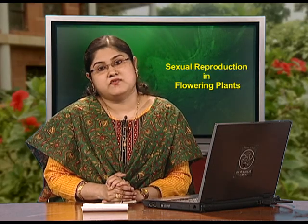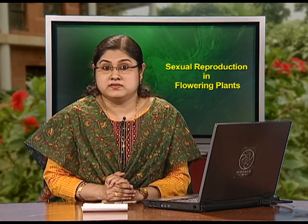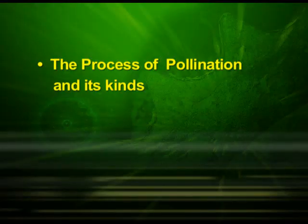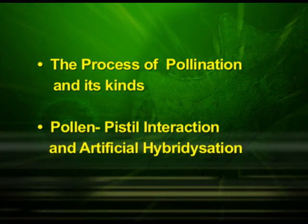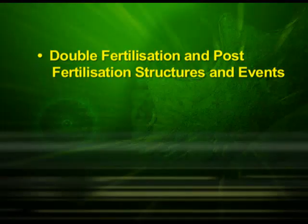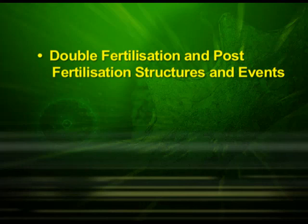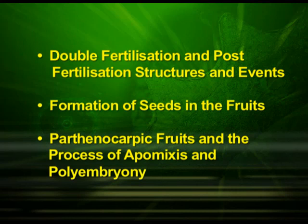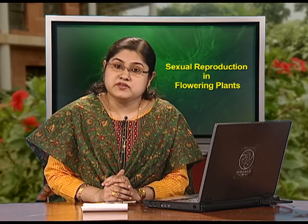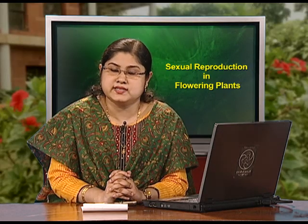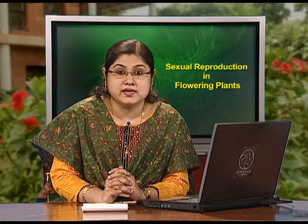With this we have come to an end of the third part of this lesson on sexual reproduction of flowering plants. Here we have discussed the process of pollination and its kinds, pollen-pistil interaction, and artificial hybridization. In the next episode, we will focus on double fertilization and post-fertilization structures and events like endosperm and embryo development, formation of seeds in the fruits, parthenocarpic fruits, and the process of apomixis and polyembryony. The point for thinking for this part of the lesson is: what is vivipary in plants? We will discuss this point in the next part of the study program. Thank you.